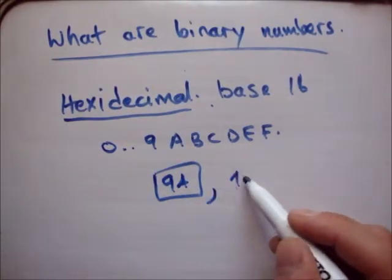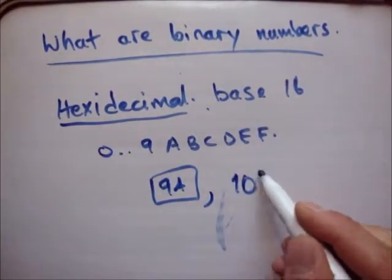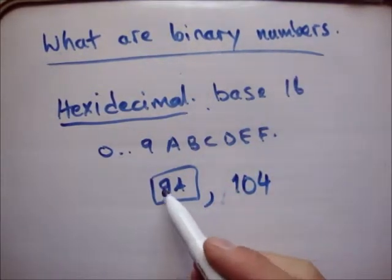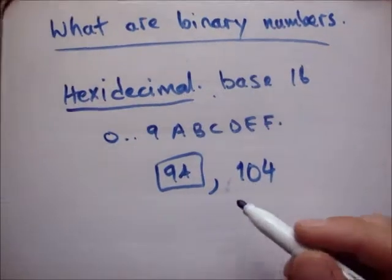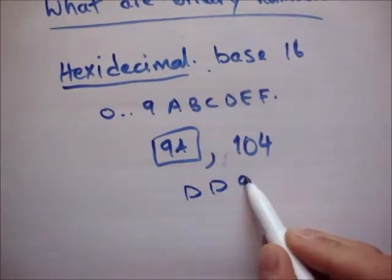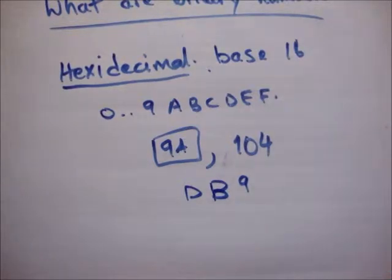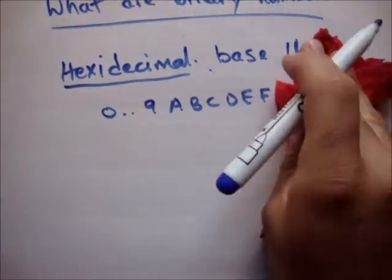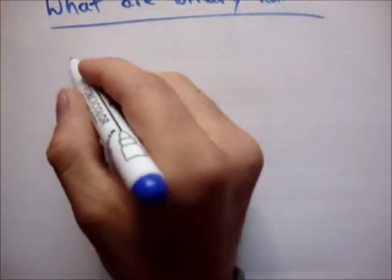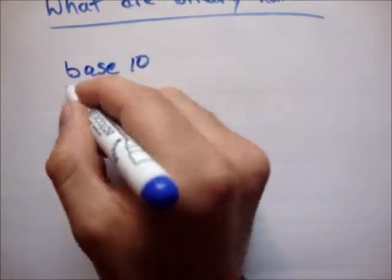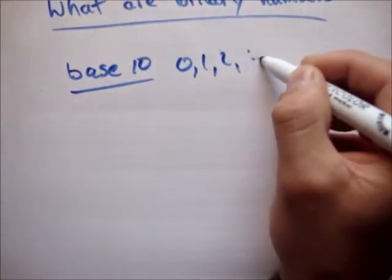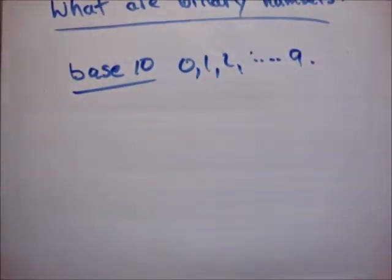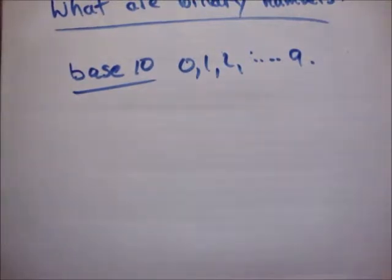In base 10 you might have one kind of number, but in hexadecimal you might have 9A, or DB9, or something like that — those are numbers. You might say, well, how is that a number? Well, in our base 10 system we use characters 0 to 9 to represent all our numbers. Who's to say that they have to be those characters? All that matters is that we have 10 of them — they could look like anything.